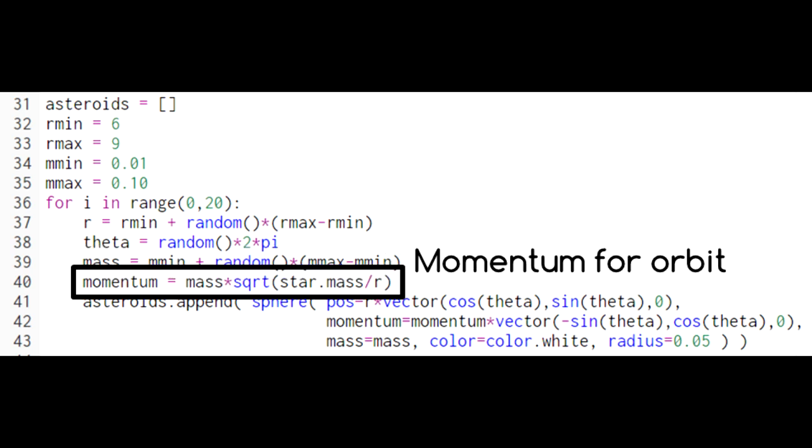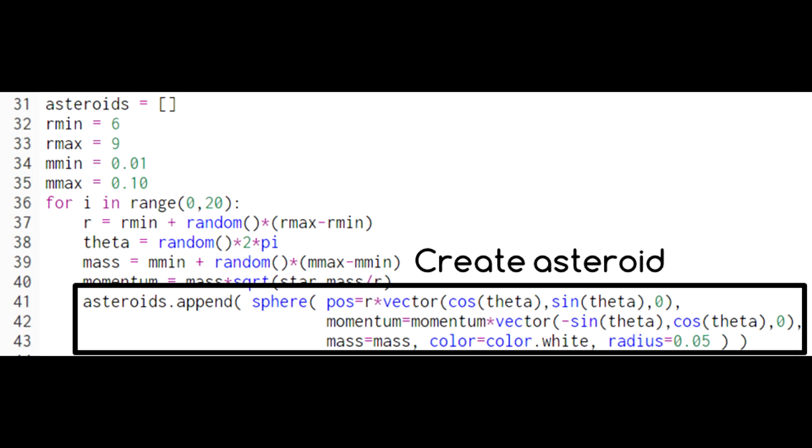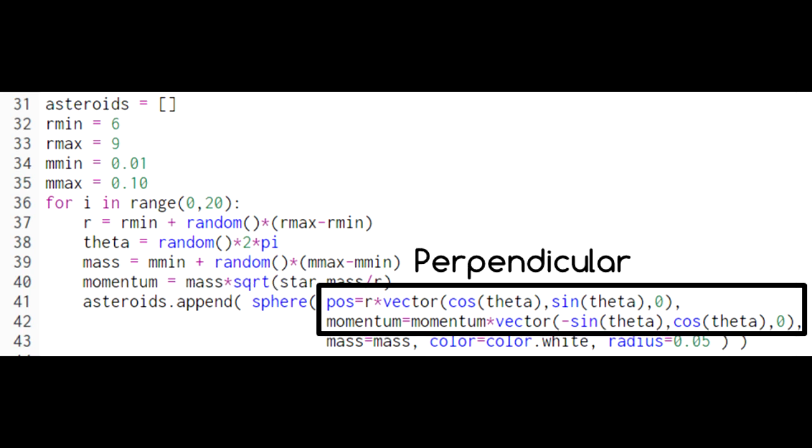We use this information to calculate the momentum required of this asteroid's orbit. With all this information, we create our asteroid. Notice that the momentum vector is designed to point perpendicular to the position vector, giving us a circular orbit.